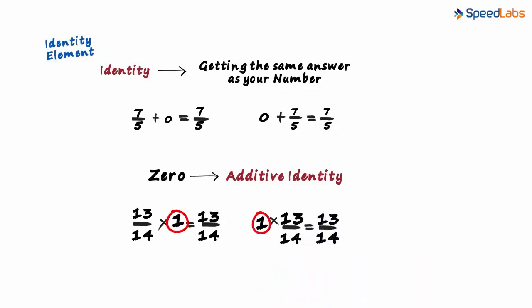Any guesses on what 1 is called? Yes, 1 is called the multiplicative identity. Multiplicative because it's multiplied, and identity because we get the same answer as our original number.